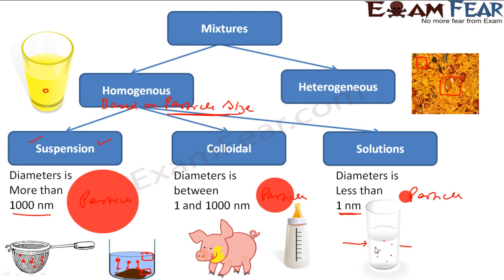Since the particle size is very small, you can't filter this with just a filter paper, because the filter paper holes are bigger and the particle size is smaller. A good example is ink and water — if you add just 3 or 4 drops of ink to water, the whole water becomes a homogeneous solution and you can't actually separate ink from water using a normal filter paper.